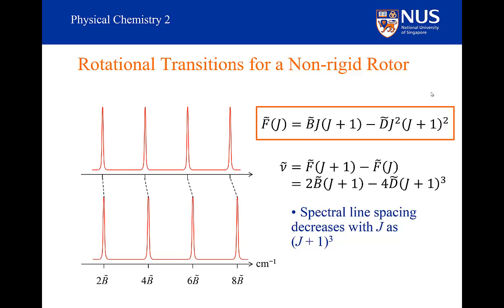You can see why this reduced gap becomes more easily visible as you go to higher J values. It is because the spectral line spacing depends on (J+1) all cubed. So if J is very large, I'll be subtracting a very large value as we go to higher levels.